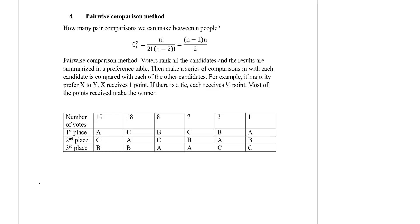In this video we are going to talk about the Pairwise Comparison method. The Pairwise Comparison method is a method where voters rank all the candidates and the results are summarized in a preference table. Then they make a series of comparisons in which each candidate is compared with each of the other candidates.